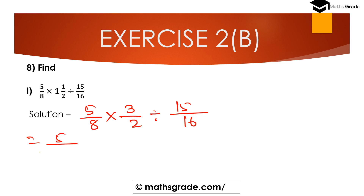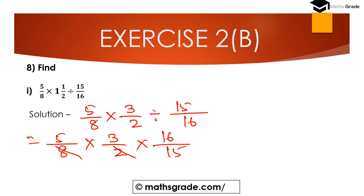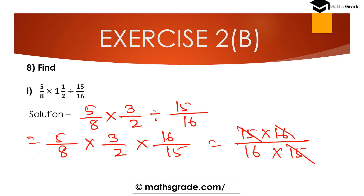Now 15/16 reciprocal is 16/15. So 5/8 multiplied by 3/2 multiplied by 16/15. In the numerator: 5 × 3 × 16 = 15 × 16, and denominator: 8 × 2 × 15 = 16 × 15. The 15s cancel and the 16s cancel, so the answer is 1. Therefore, (5/8 × 1 1/2) ÷ (15/16) = 1.